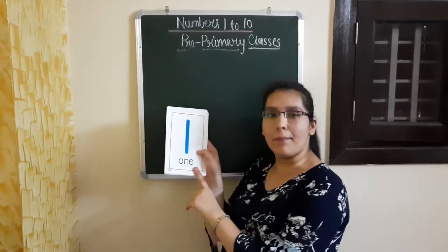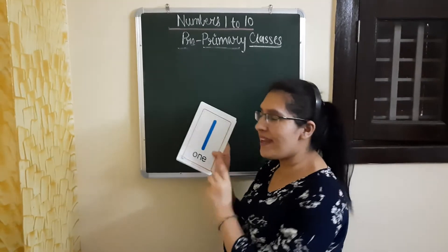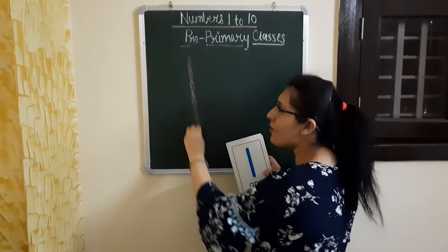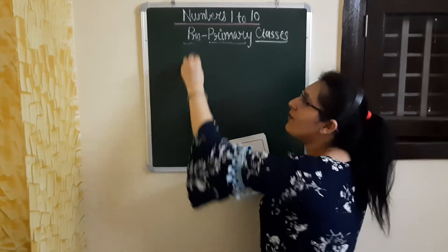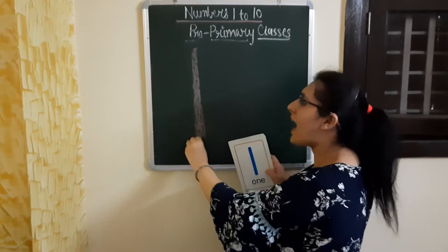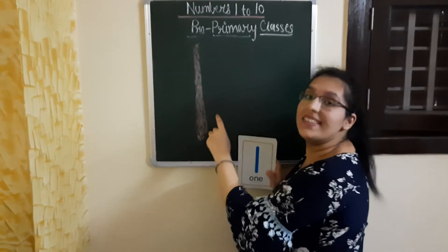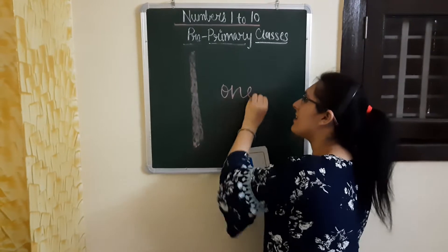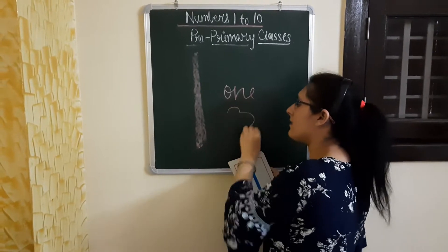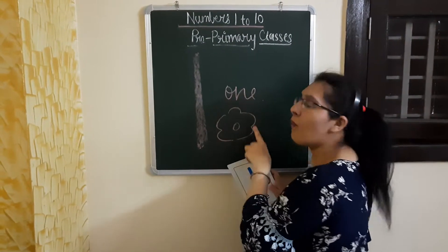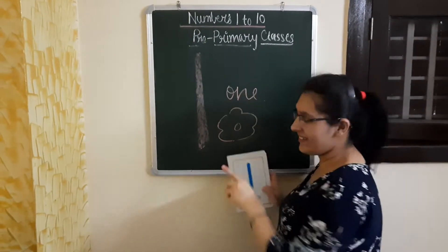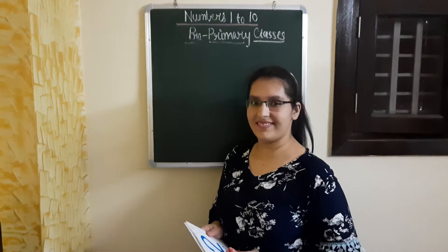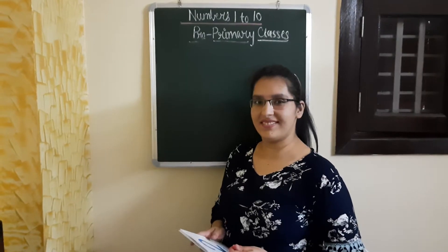This is number 1. So let us make it: 1 stroke down and 1 stroke down. This is number 1. Here is number 1.